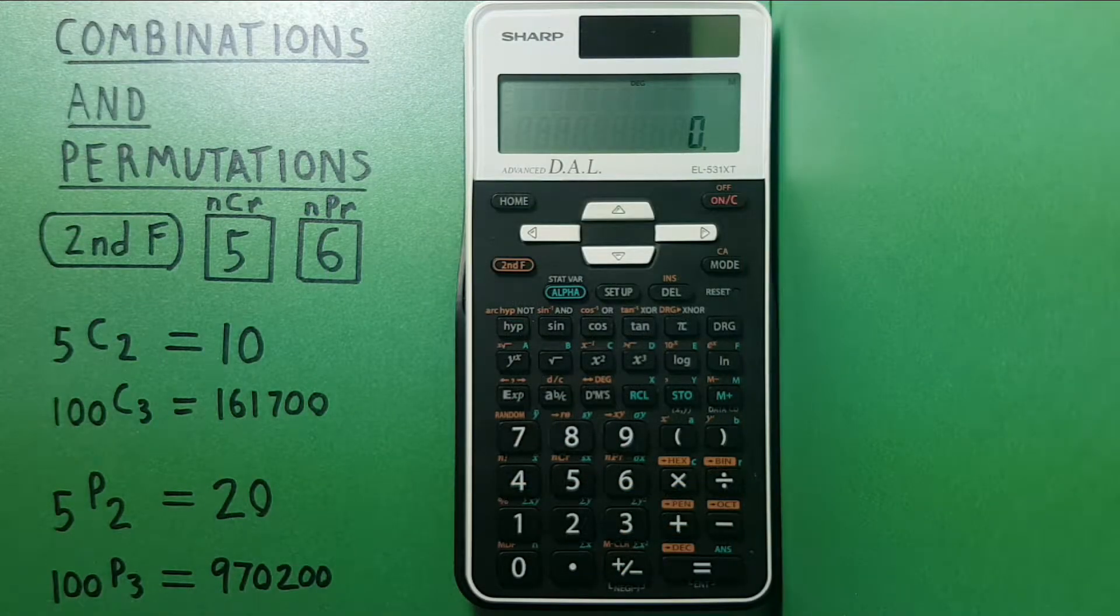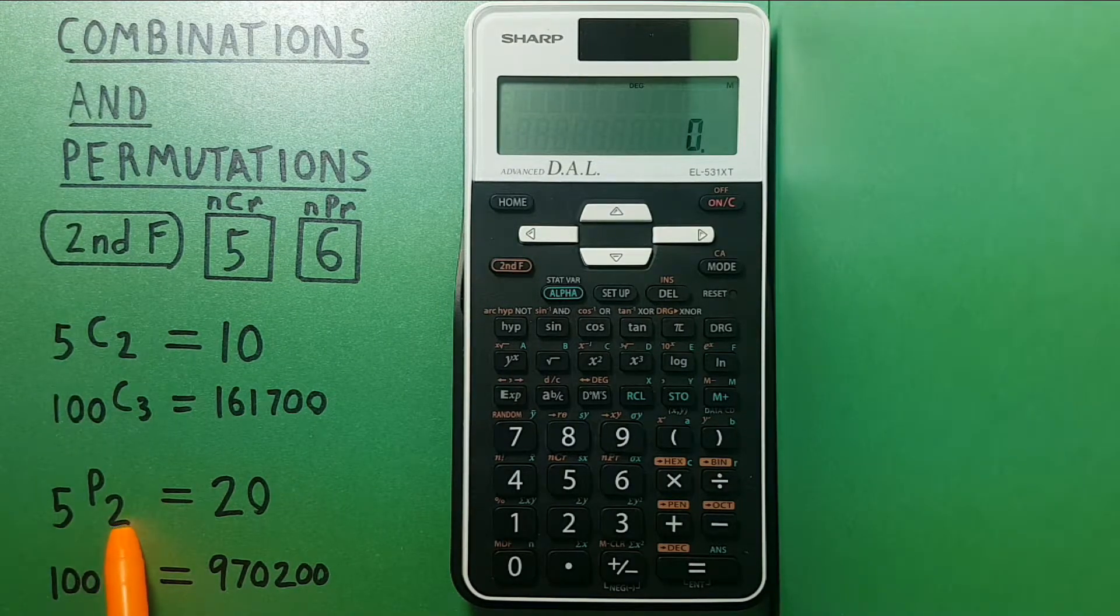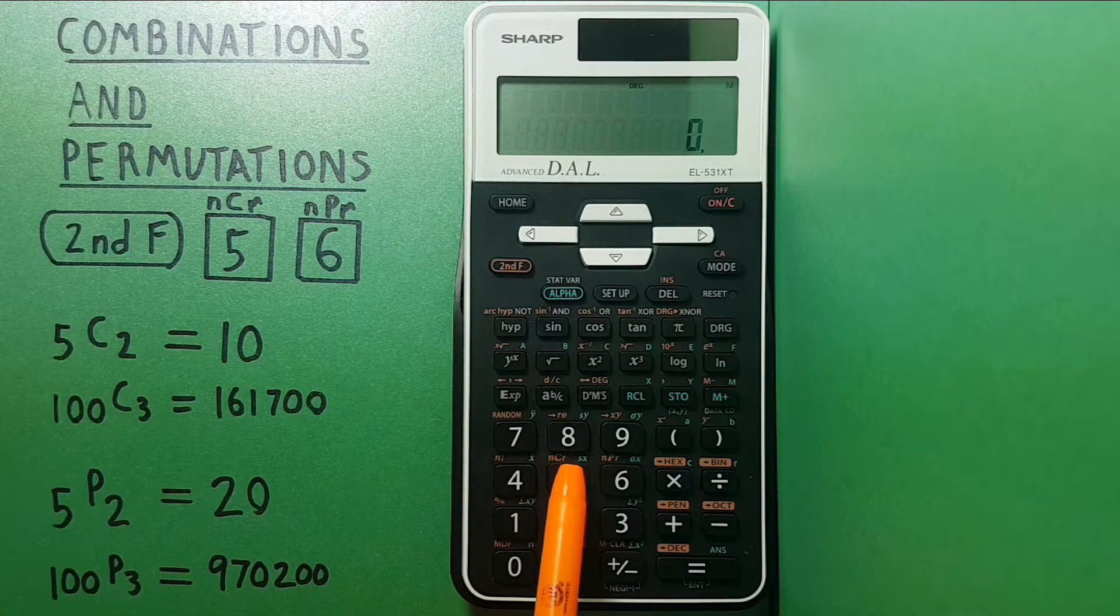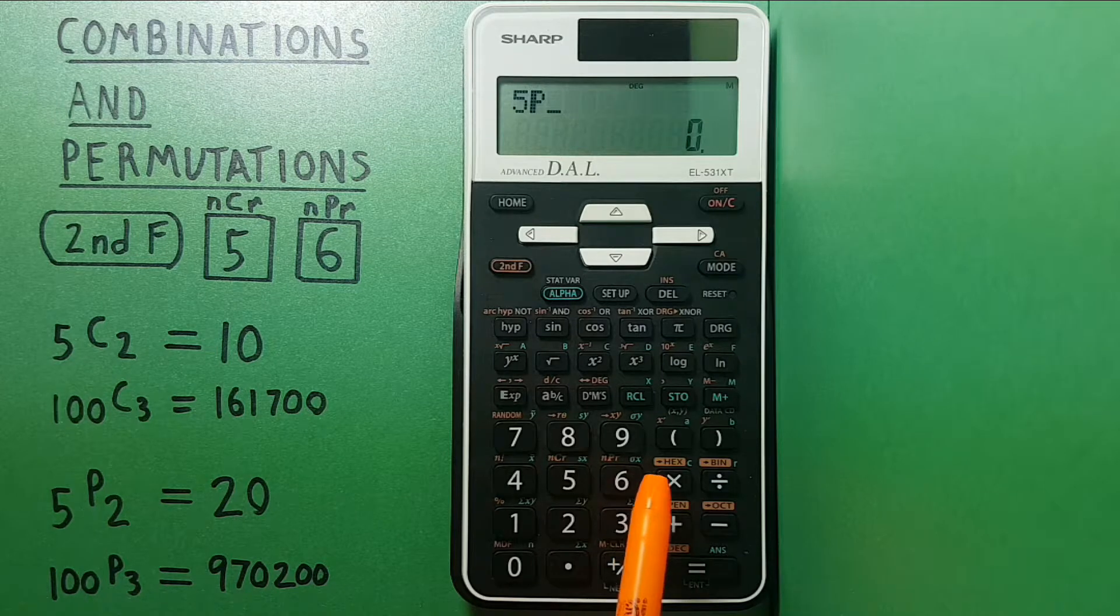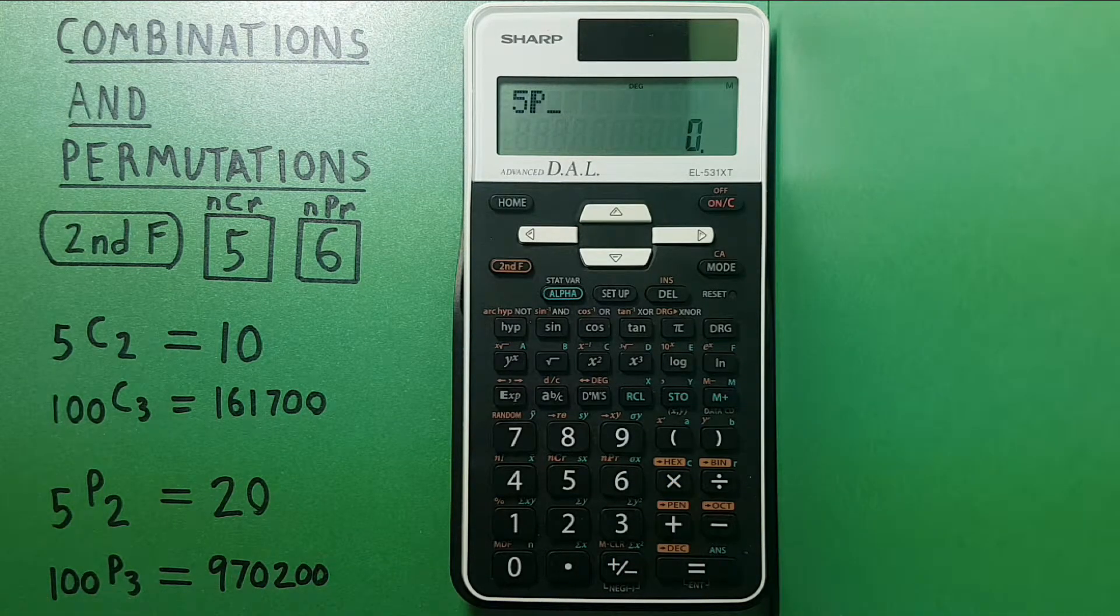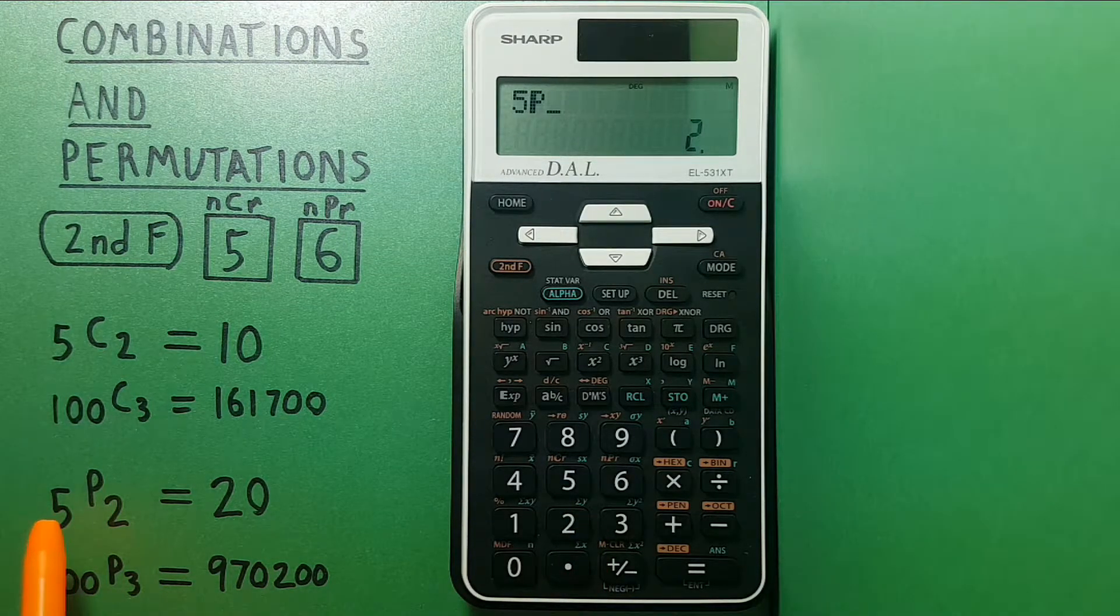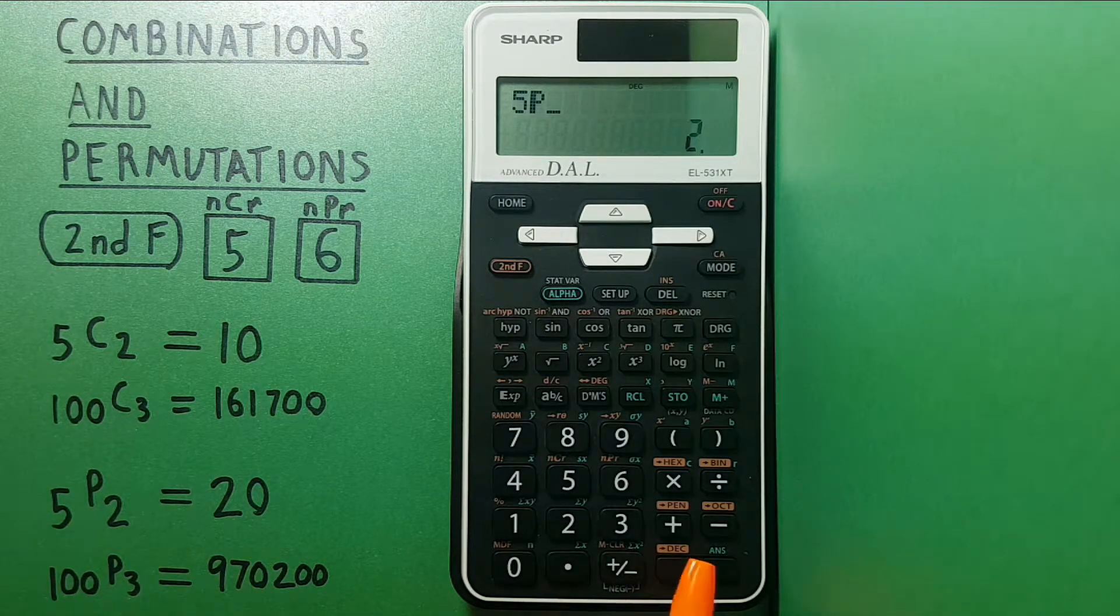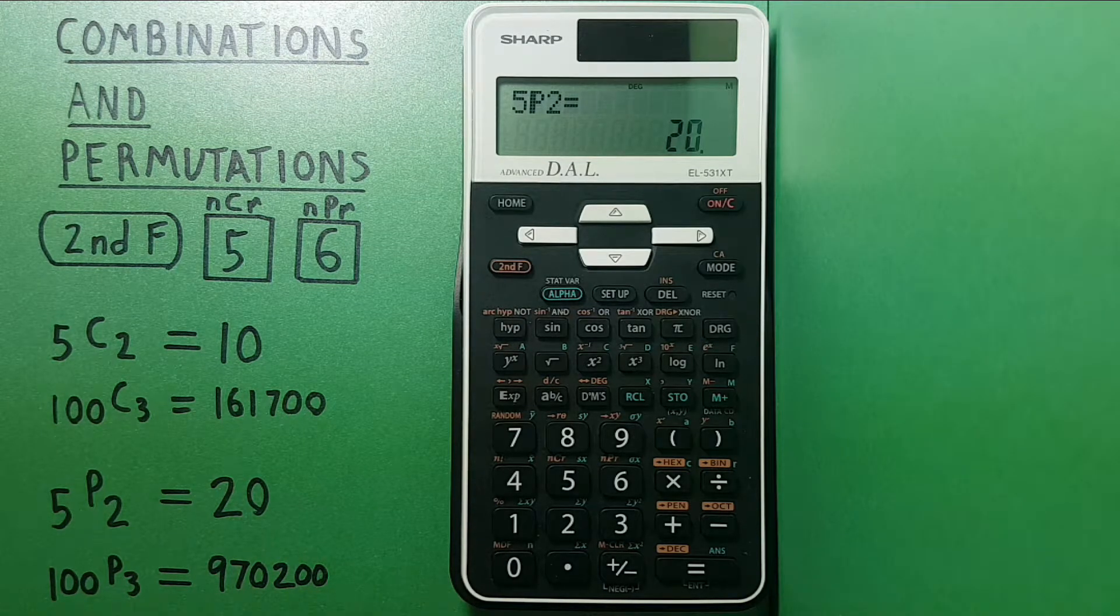So if we have a set of five and we want to choose two where the order matters, we would enter five, second function six to get that P which indicates permutation, and then two. So we're choosing two from a set of five where order matters, and we press equals and get 20. There are 20 possible permutations.